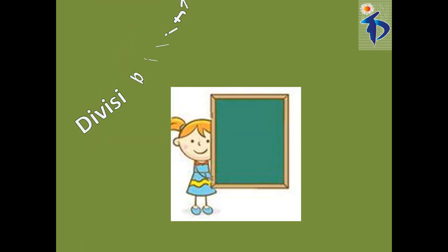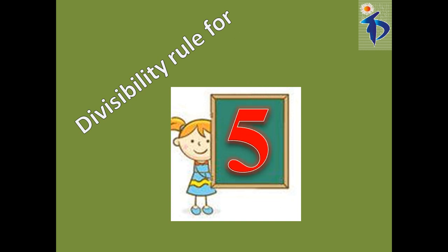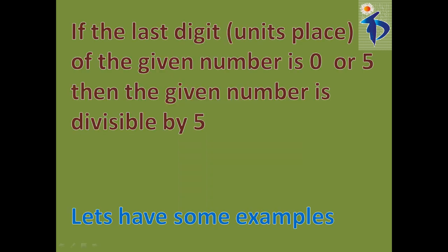Now let us learn the divisibility rule of 5. What is the divisibility rule of 5? If the last digit — that is, the units place of the given number — is 0 or 5, then the given number is divisible by 5. Let's have some examples.